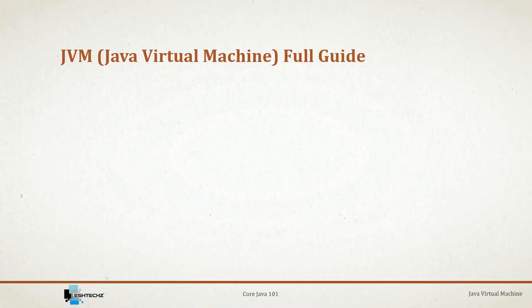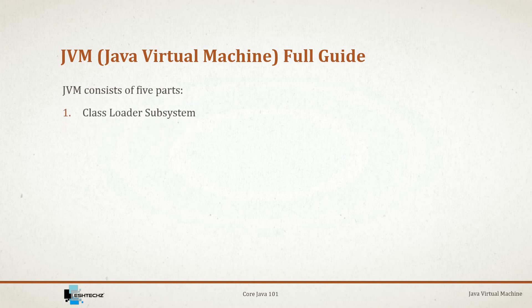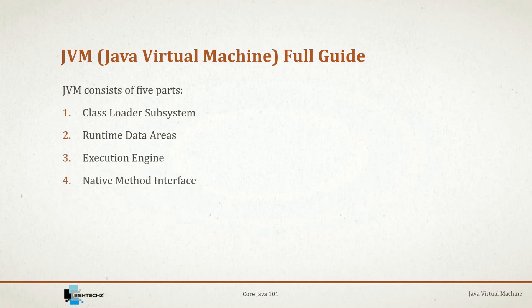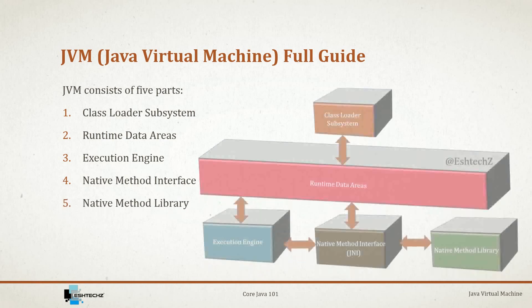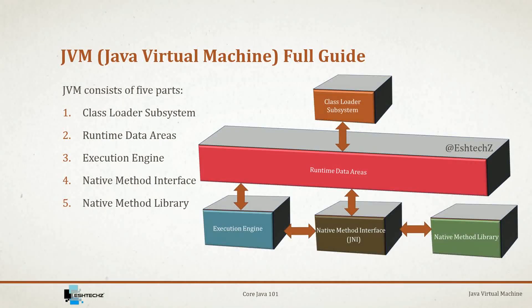Let's take a look at JVM's architecture. JVM consists of five parts: class loader subsystem, runtime data areas, execution engine, native method interface, and native method library. This is how JVM architecture looks — there are multiple parts which are interconnected with each other, and we'll be understanding each of them one by one.